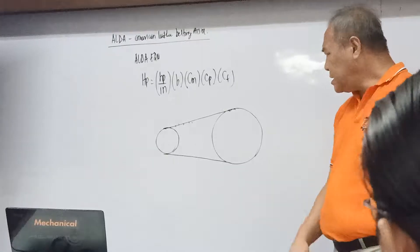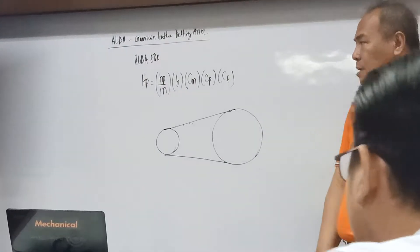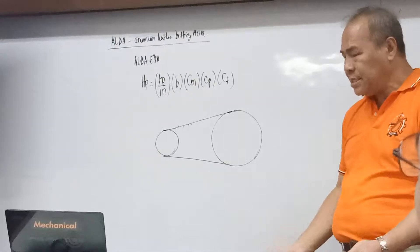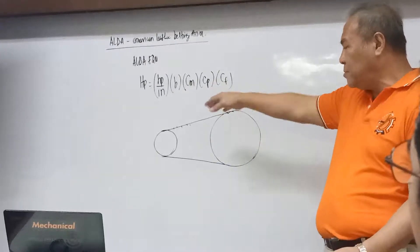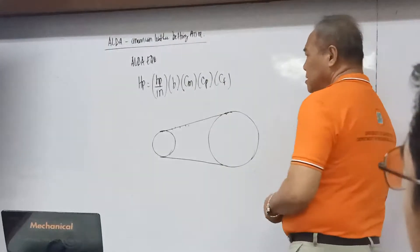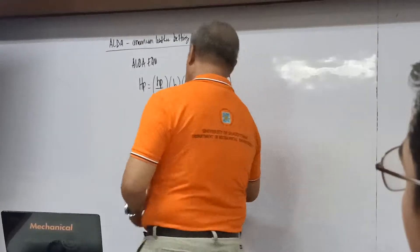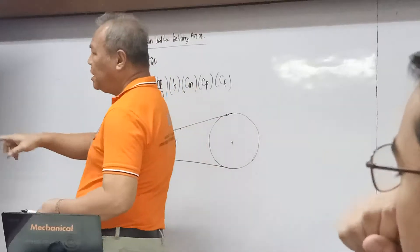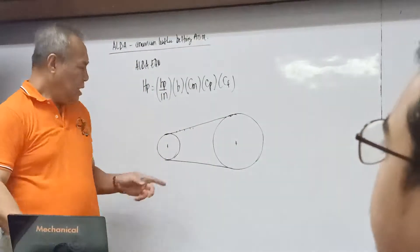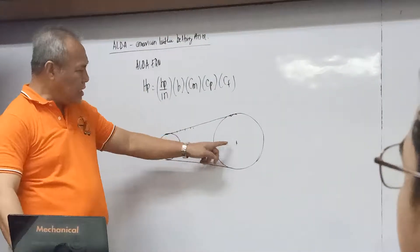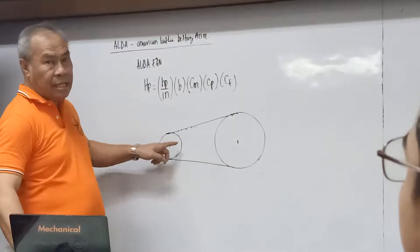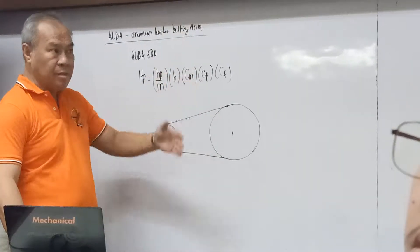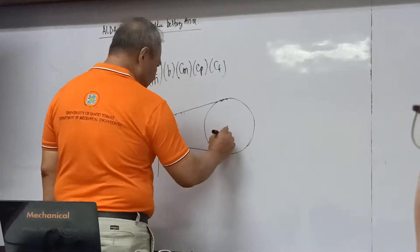According to the problem, the driving system is horizontal. The center line distance between the two pulleys is 160 inches. It is horizontal — though it could also be vertical. So the center line distance is given.